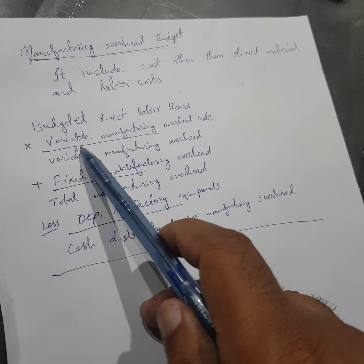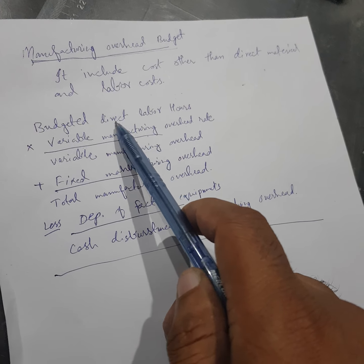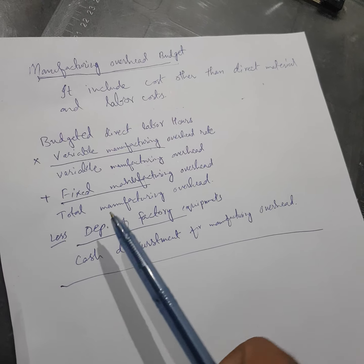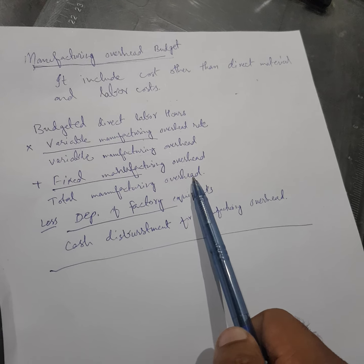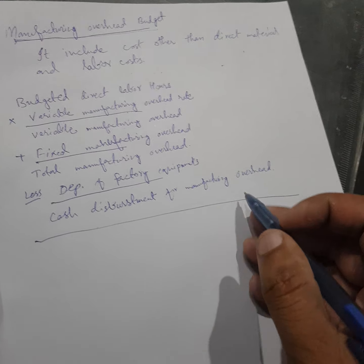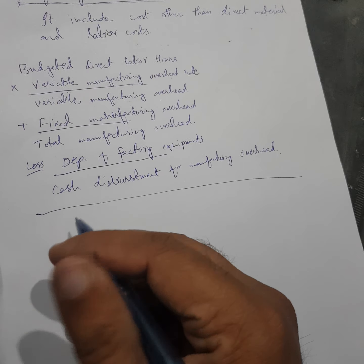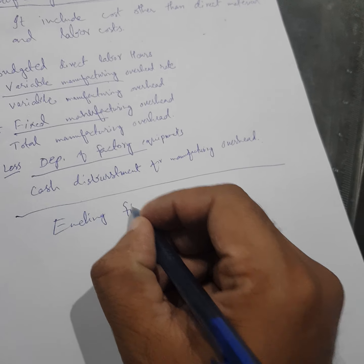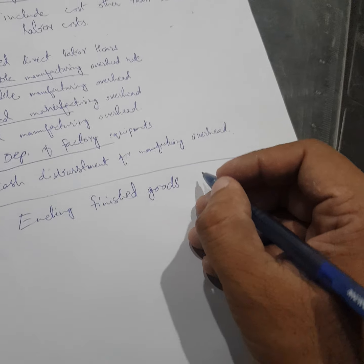We include variable manufacturing overhead, calculated by multiplying the direct labor hours with the variable manufacturing overhead rate. We add the fixed manufacturing overhead to get the total manufacturing overhead, and the depreciation of factory equipment is deducted to get the cash disbursement for manufacturing overhead. After this, we move to the ending finished goods inventory budget.